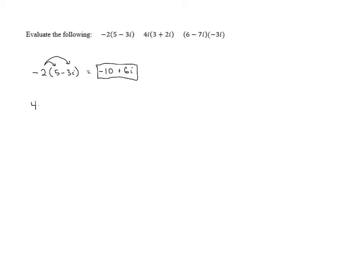Next, we have 4i times 3 plus 2i. Again, we can distribute the 4i out front into each of the terms inside. 4i times 3 is 12i, and then 4i times 2i is 8i squared.